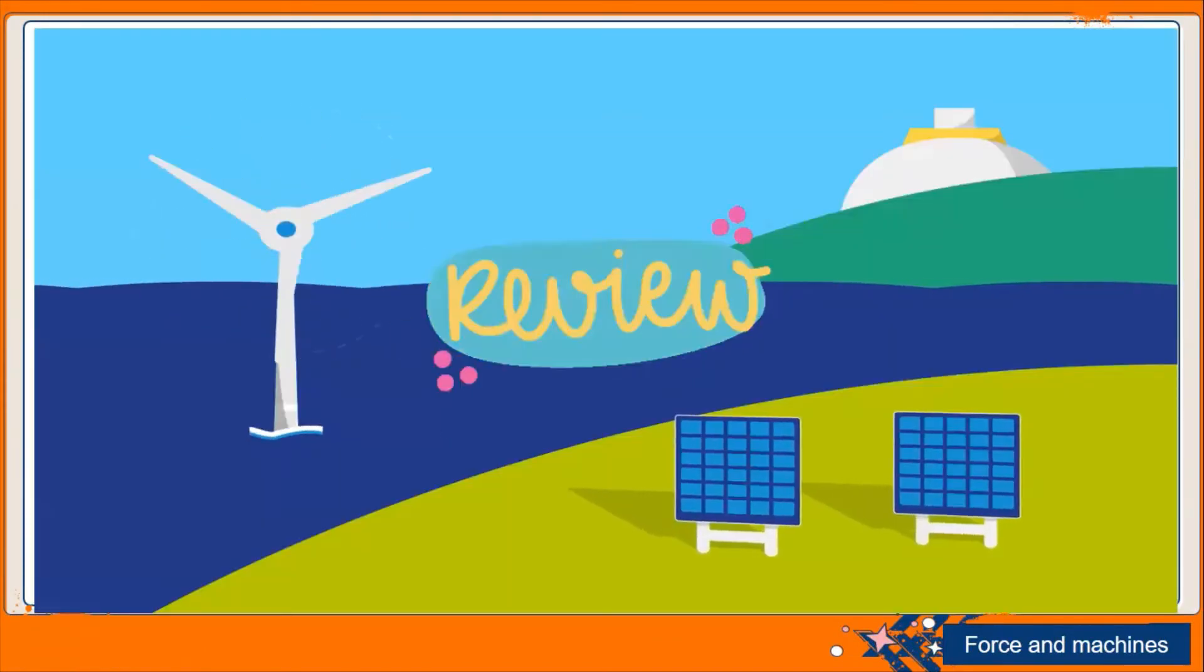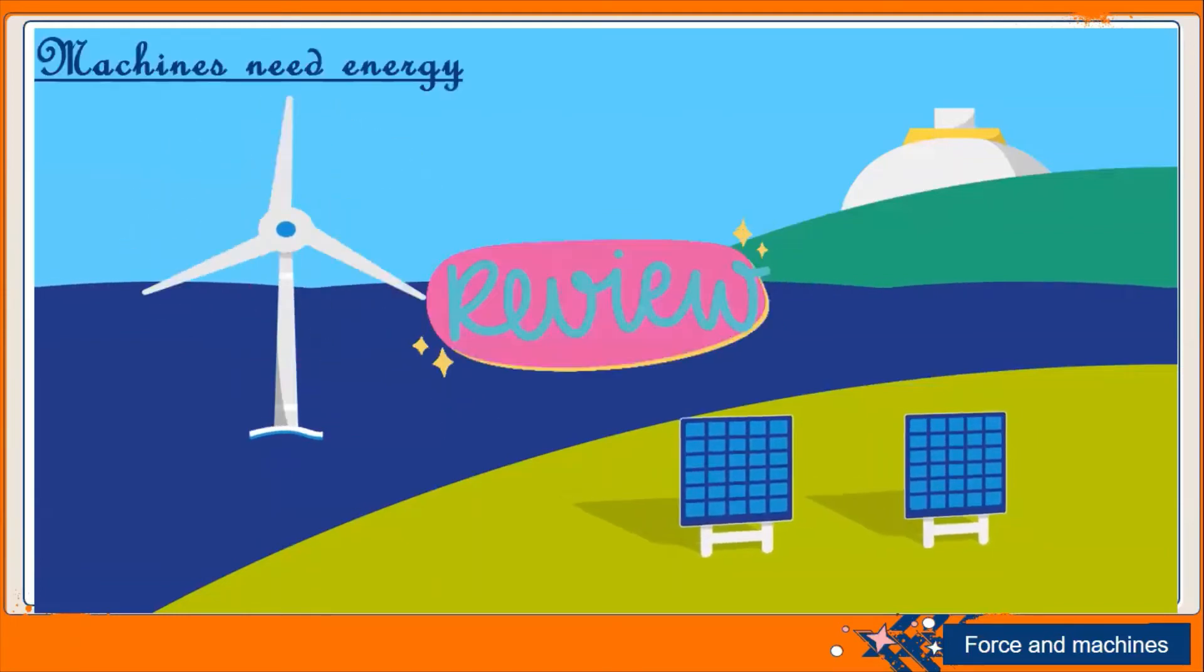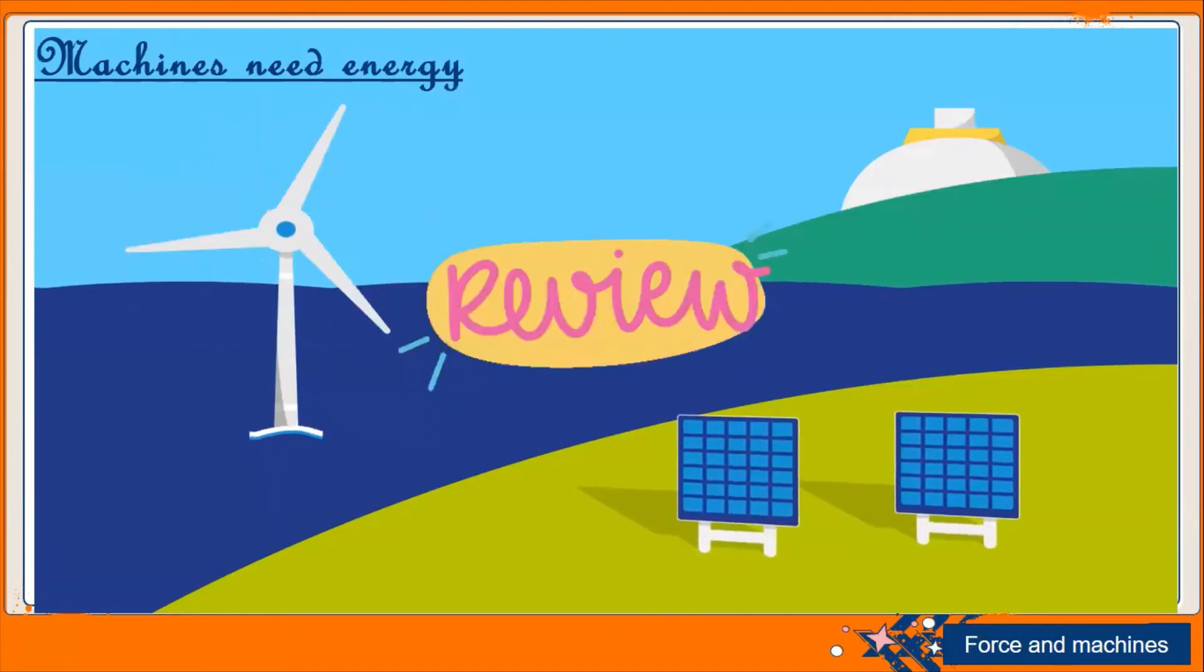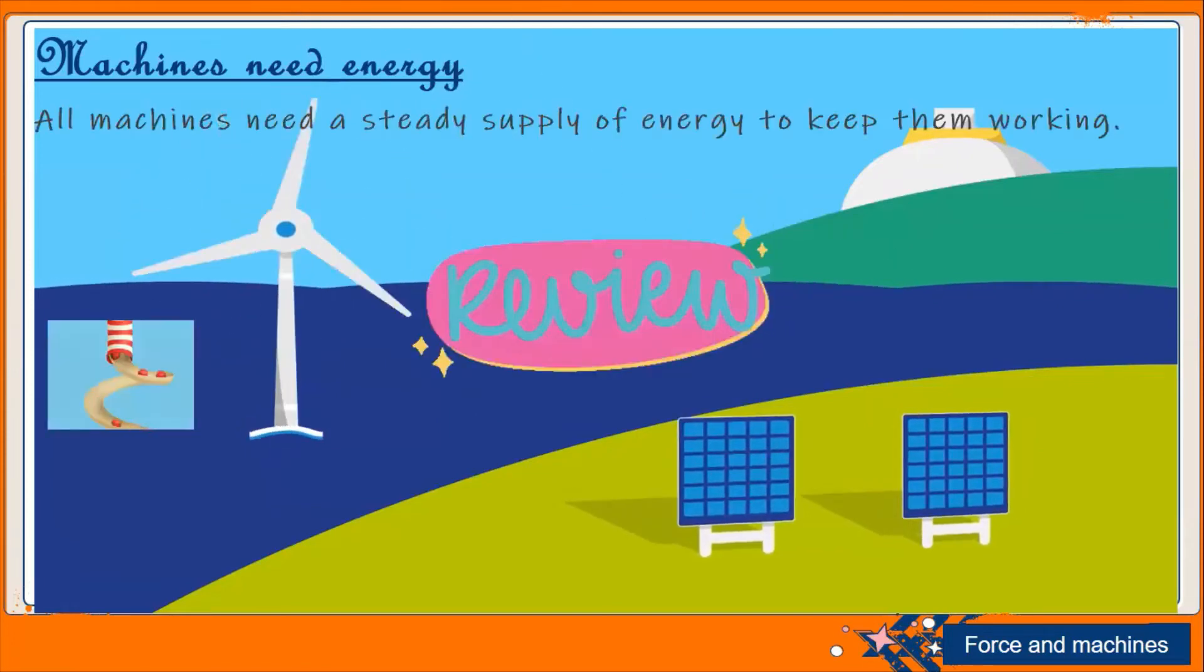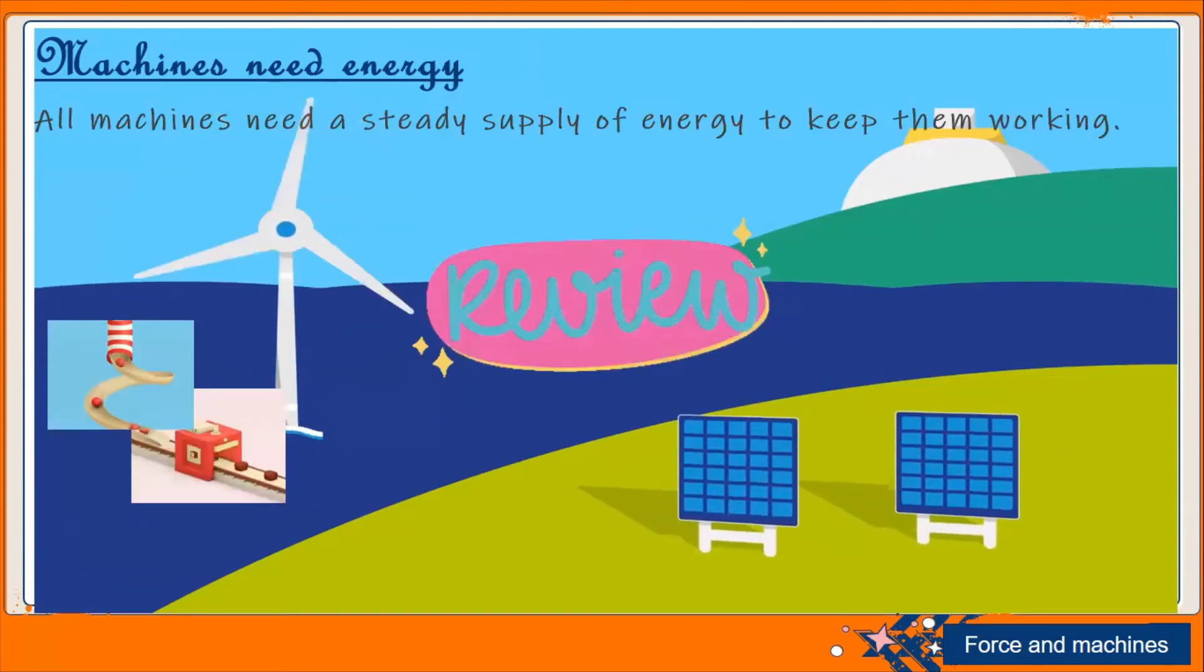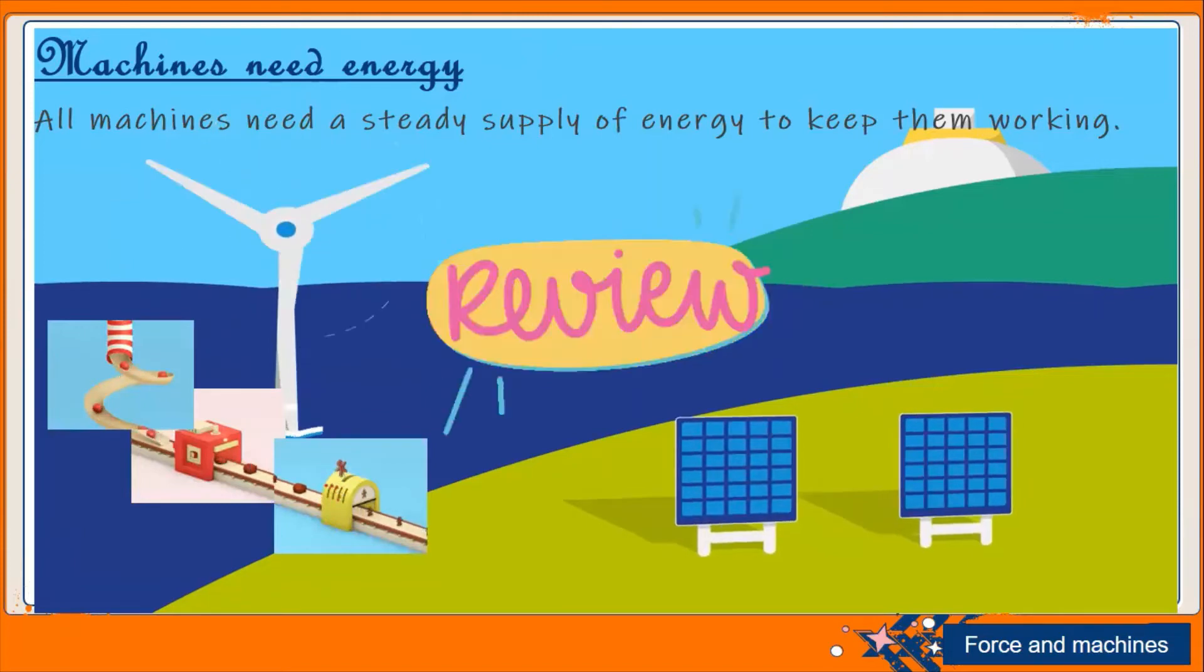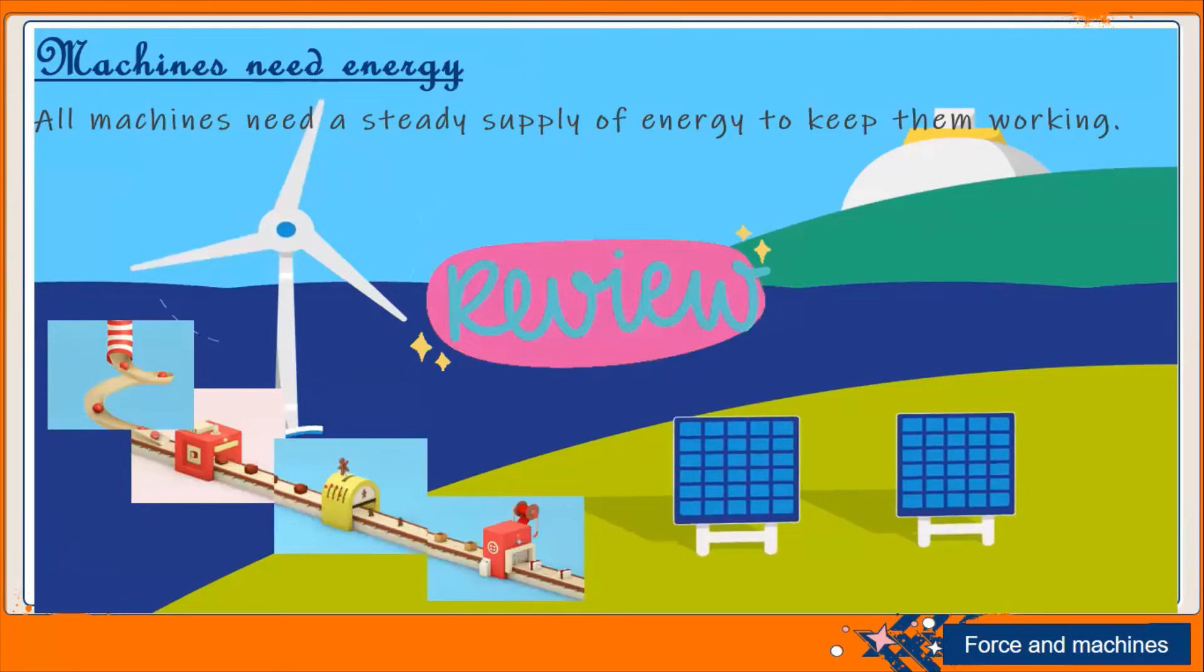Now it comes to kinds of machines. Students, before that we need to know about machines needing energy. All machines need energy to turn the moving parts inside them. Energy enables the machine to do useful work. All machines need a steady supply of energy to keep them working. Even our body is like a machine - we are eating food to get energy from that food and our body starts working.